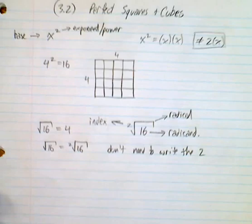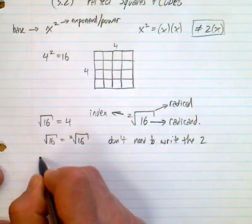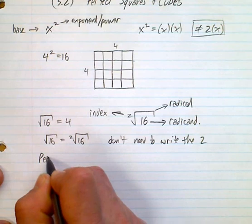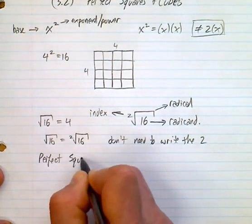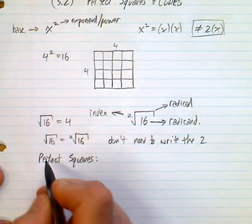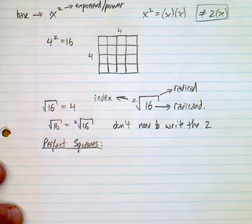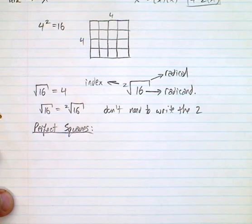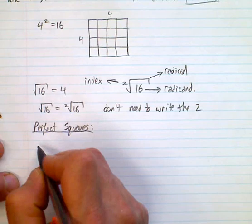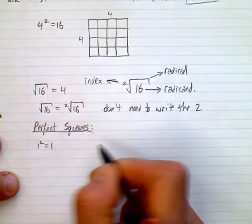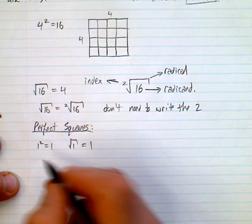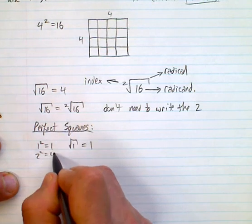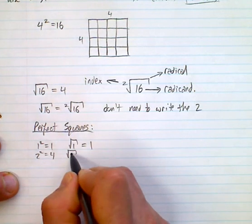What is a perfect square? I suggest you make a list of perfect squares so that you know what they are. A perfect square is like 16 — you can take the square root of it. 1 squared is 1, so the square root of 1 is 1. 2 squared is 4, so the square root of 4 is 2.